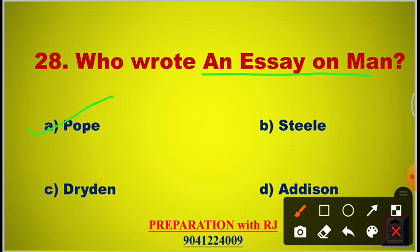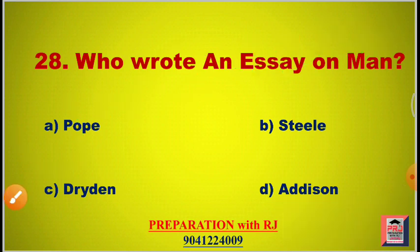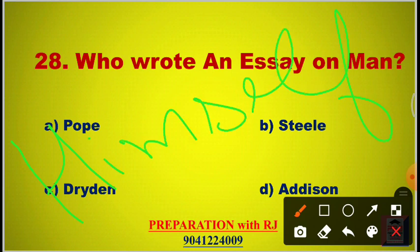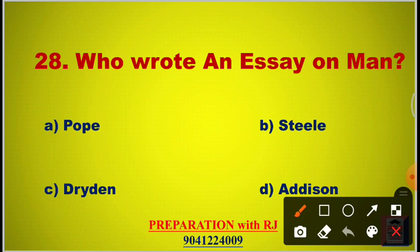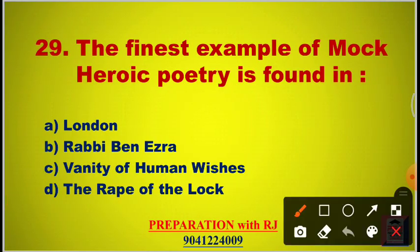Question 28: Who wrote An Essay on Man? Options are Pope, Steele, Dryden, Addison. The answer is A, Pope. This book is divided into four epistles. The first epistle deals with man's relationship with the universe. The second epistle deals with man's relationship with himself. The third epistle deals with man's relationship with society.